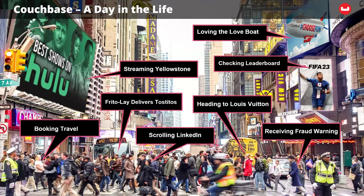They're doing about 4.6 million account profiles per second according to one of their blogs. Every time your favorite Tostitos or Frito-Lay product gets delivered to your supermarket, that's being handled by a mobile application running Couchbase. When you're streaming your favorite TV shows — whether it's Hulu, DirecTV, Peacock, or Sky — those are all Couchbase-powered applications. That great personalized user experience on Carnival or Royal Caribbean cruises? That's Couchbase too.